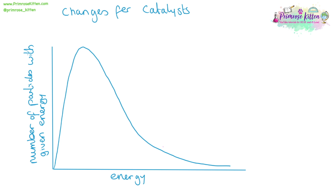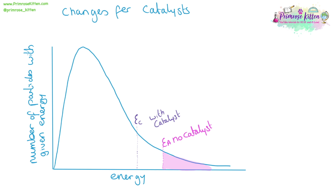The change in rate of reaction by using a catalyst can also be shown on a Maxwell distribution curve. At the activation energy with no catalyst, the number of particles that have enough energy to react can be seen in pink. The introduction of a catalyst will lower the activation energy, shifting it to the left — not changing the line of the graph, just shifting the point of where the activation energy is. This means there are now both the pink and the purple particles that have enough energy to undergo a reaction.